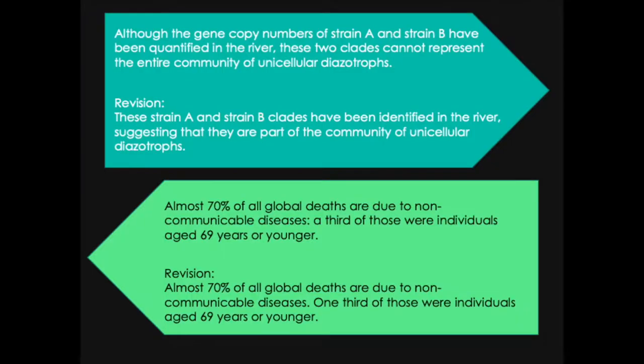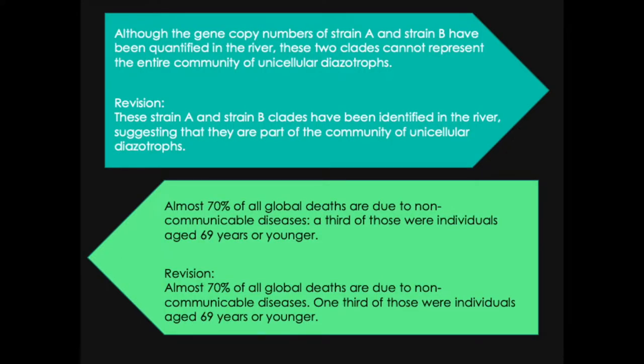My suggestion would be to revise these two sentences as we see here: 'Strain A and strain B clades have been identified in the river, suggesting that they are a part of the community of unicellular diazotrophs.' The first thing I did was remove the gene copy numbers. The presence of strain A or strain B is more important than their gene copy numbers — that's what the sentence is about. The original sentence was saying that although we found strain A and B in the river, they cannot represent the entire community.